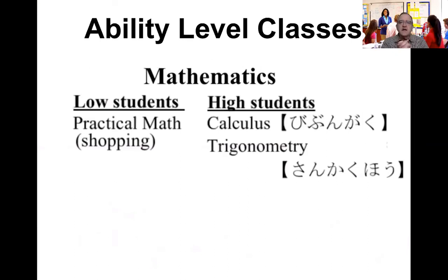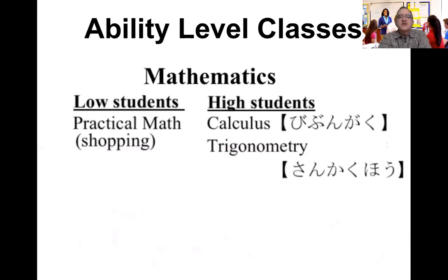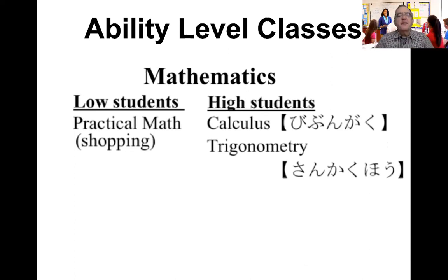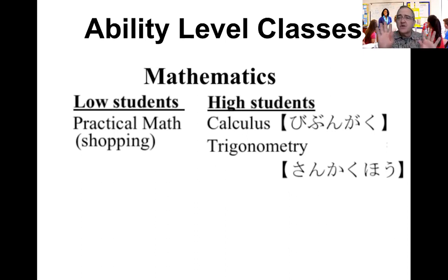Ability level classes: American high schools begin to divide students, like junior high. However, American high schools do not have homerooms — or if they do, it's just 10 minutes for attendance and announcements. For math, English, science, and social studies, students are divided by ability into higher or lower level classes, and they have no choice. If they're lower level, they must take lower level class; if their score is high, they take the high level class.